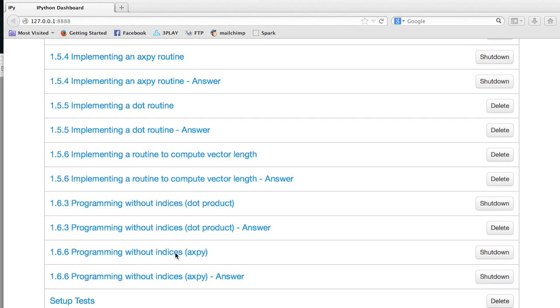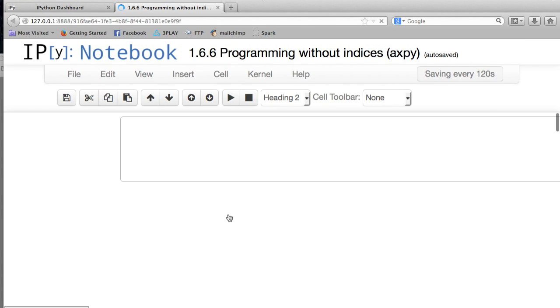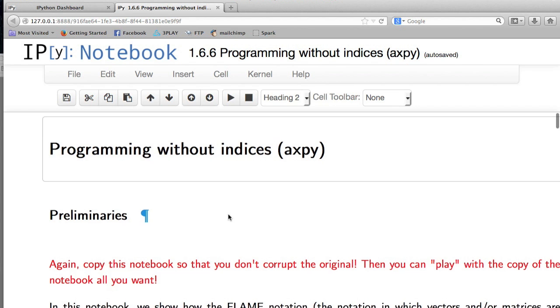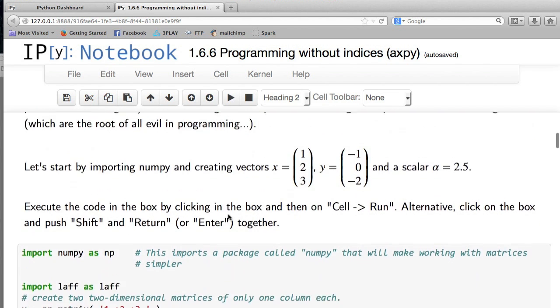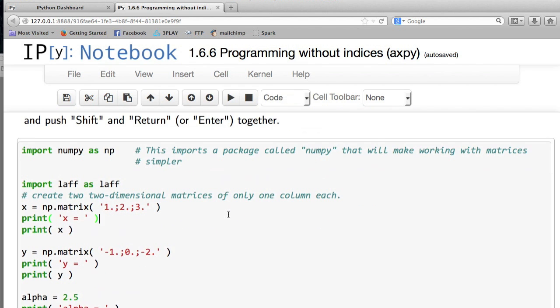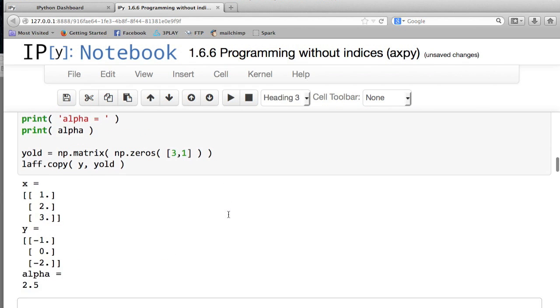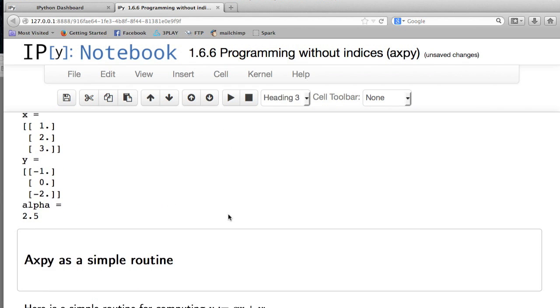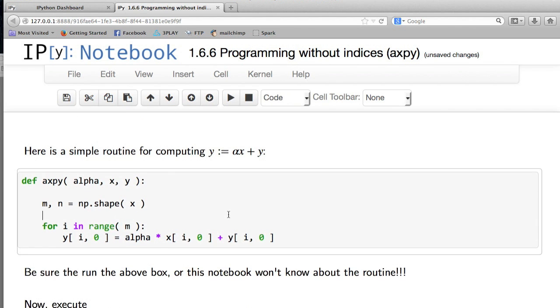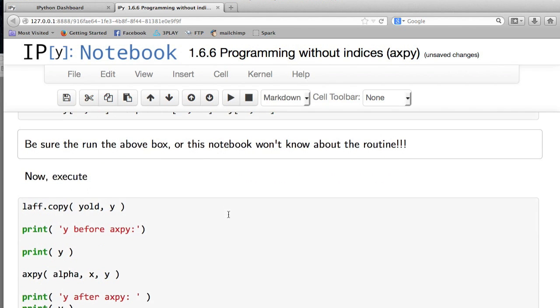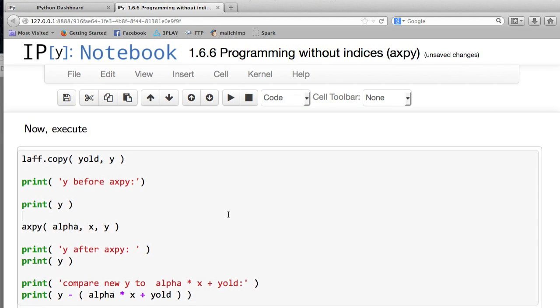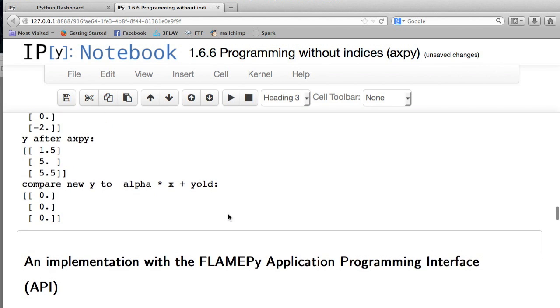We're going to open up the next IPython notebook, this is 1.6.6. For the most part, I'm just going to let you read this. It goes through setting up a vector. Make sure that you execute the boxes. We have a vector x and y and alpha, and then we have a simple routine for implementing the Axby that we coded before. We can test that and we get the right answer.